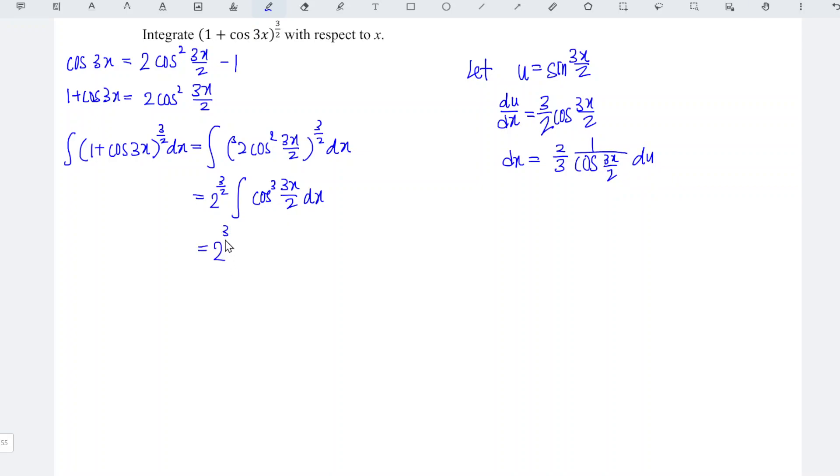And now we should replace: we have 2 to the power of 3 over 2, integrate cos cubed—we can split to cos 3x over 2 times cos squared 3x over 2.